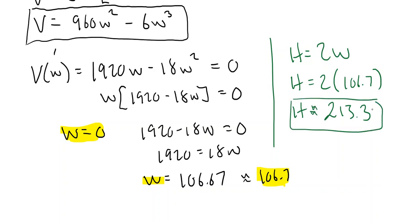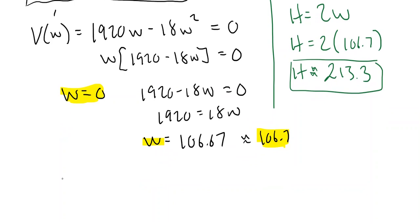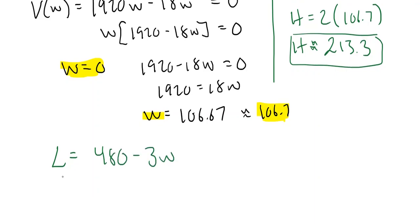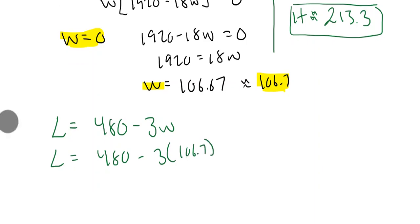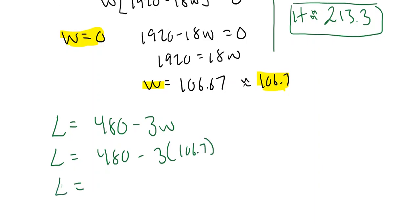Lastly, the length. Well, with the length, we use the constraint 480 minus 3W. And so, again, substituting in, we have 480 minus 3 times 106.7. And so the length is going to be approximately 159.99 or approximately 160. And there's my length.